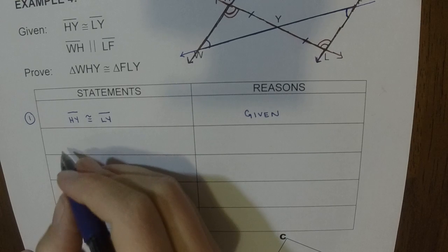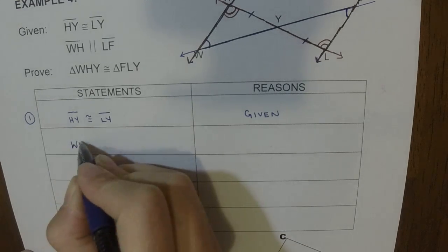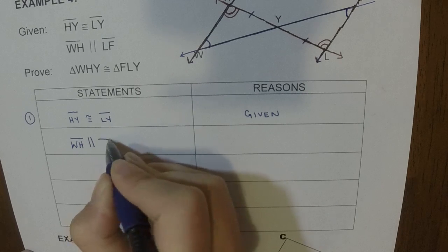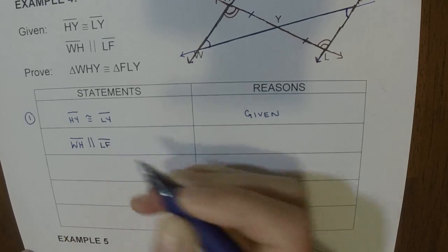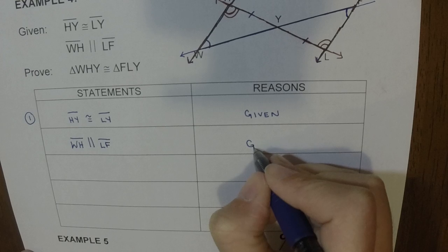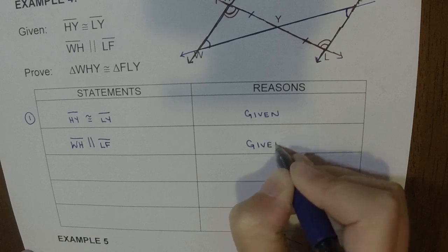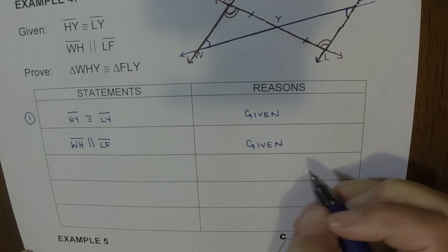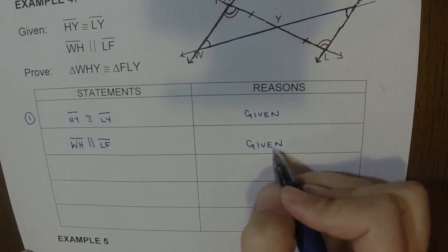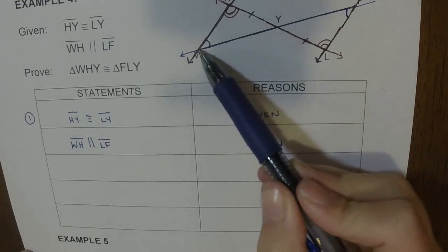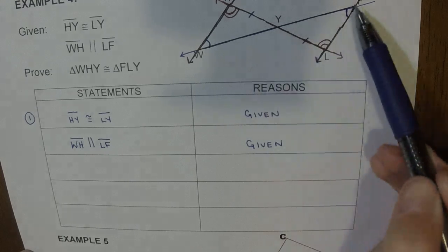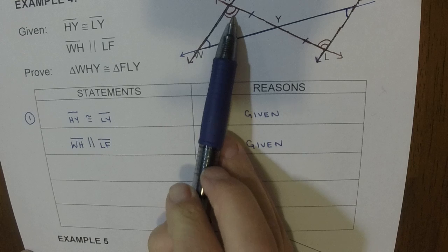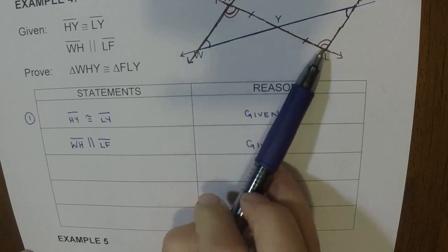Then down here, my next given is that WH is parallel to LF. And again, this is given. But this is not a congruency. From this, we figured out that angle W was congruent to angle F, and that angle H was congruent to angle L.